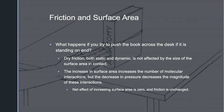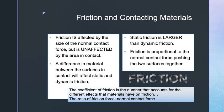To summarize: an increase in surface area increases the number of molecular interactions, but a decrease in pressure decreases the magnitude of those interactions. Friction is affected by the size of the normal contact force but is unaffected by the area in contact. It is always easier to keep something moving than to start it moving — thus static friction is larger than dynamic friction. The type of material between the surfaces will affect static and dynamic friction: two hard, smooth surfaces have less friction than two rough, soft surfaces. Friction is proportional to the normal contact force. The coefficient of friction is a number that accounts for the different effects materials have on friction — it is the ratio of friction force to normal contact force.